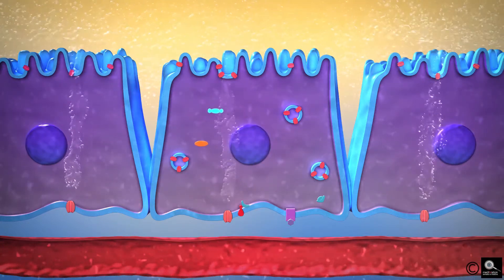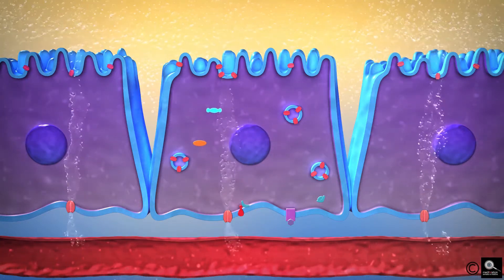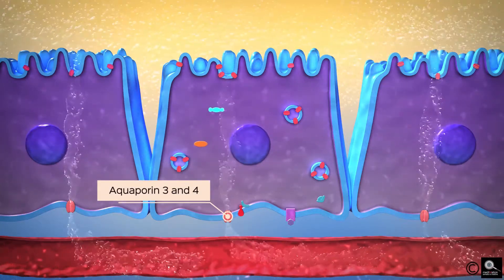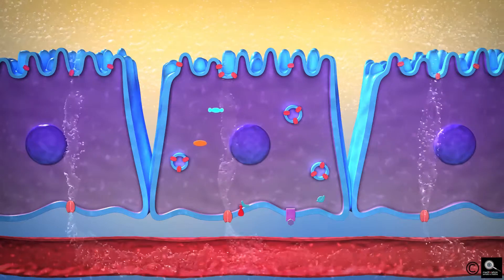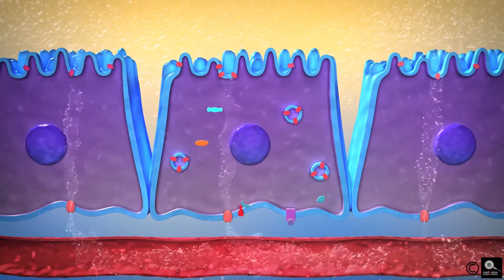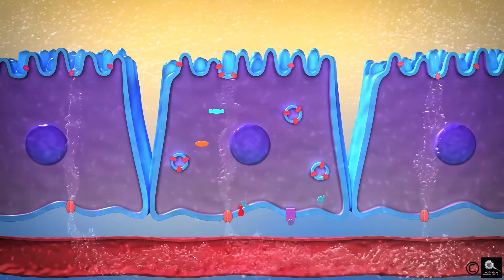The water then travels from the cells into the interstitium through aquaporin-3 and aquaporin-4 channels which are present on the basolateral membrane of the cells. These channels are not under the control of ADH.